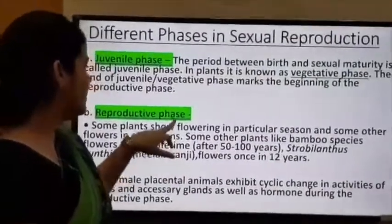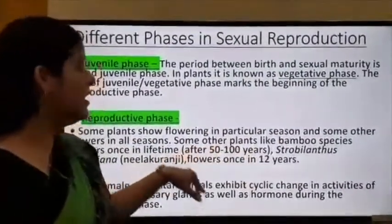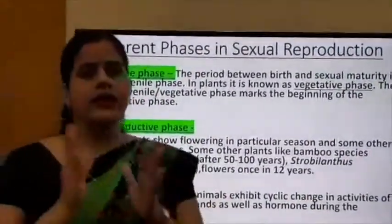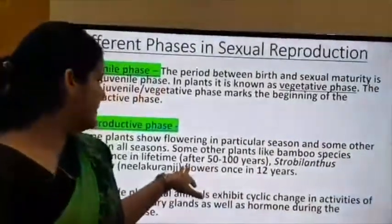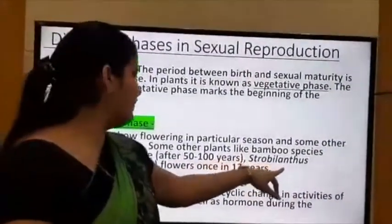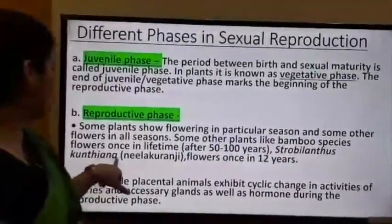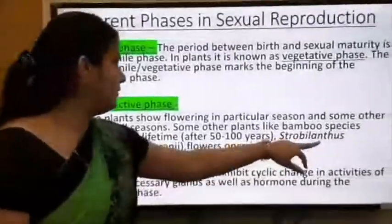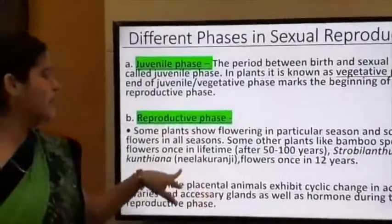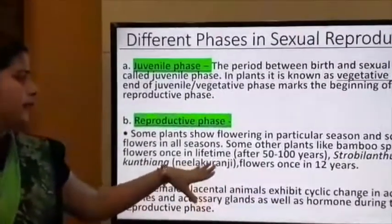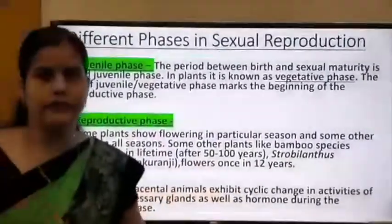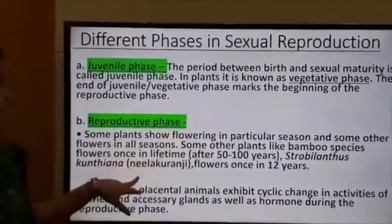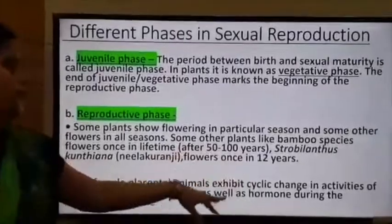Some plants like bamboo species flower only once in a lifetime — they can reproduce only once, after 50 to 200 years. Strobilanthus kunthiana, also known as Neela Kurinji, has a reproductive phase once in 12 years.